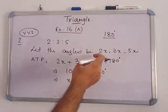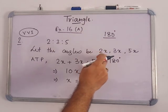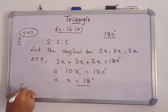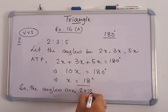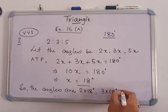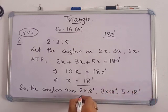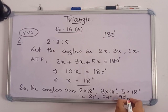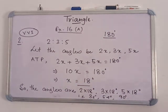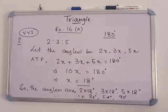Now we find the value of each angle by substituting x equals 18. The angles are 2 into 18, 3 into 18, and 5 into 18, which gives 36 degrees, 54 degrees, and 90 degrees. Since one angle is 90 degrees, this is a right angle triangle.